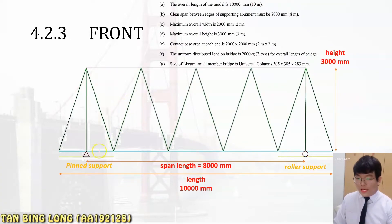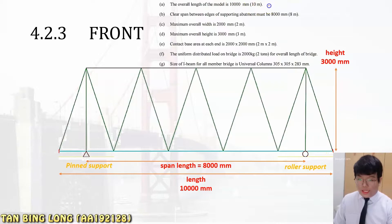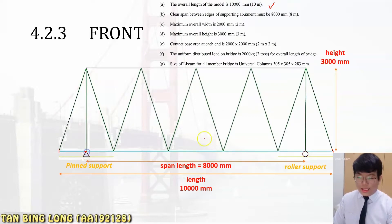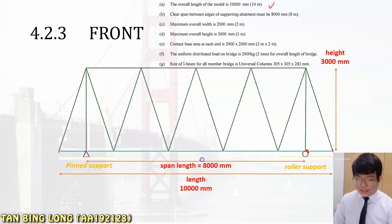The length is 10,000 millimeters from one end to the other. In this project, we use the simply supported beam. We use a pin support at one end and a roller support at the other end. The span length from the pin support to the roller support is 8,000 millimeters.